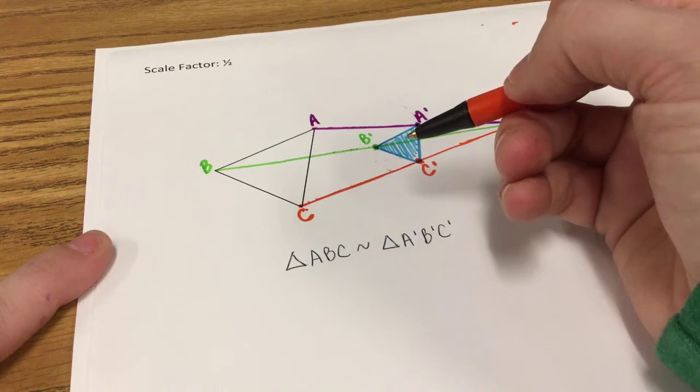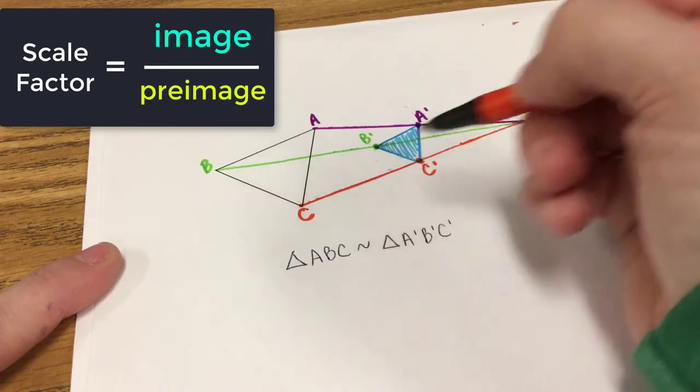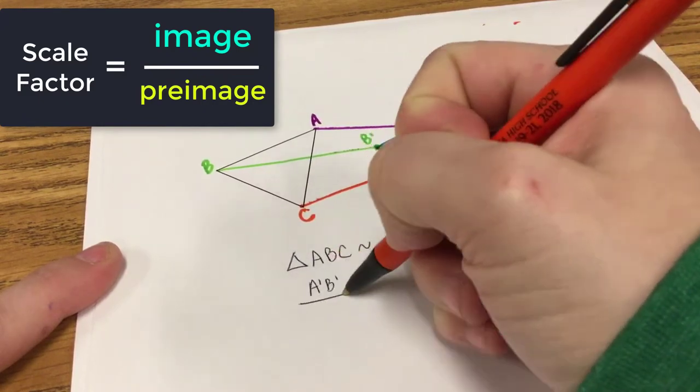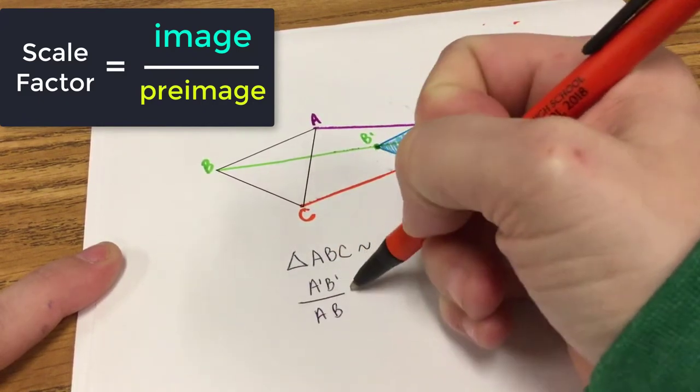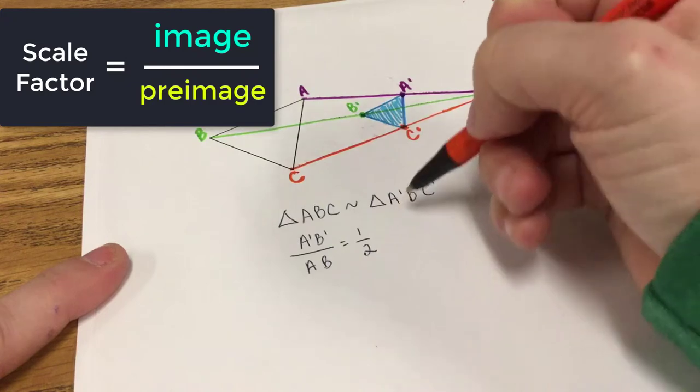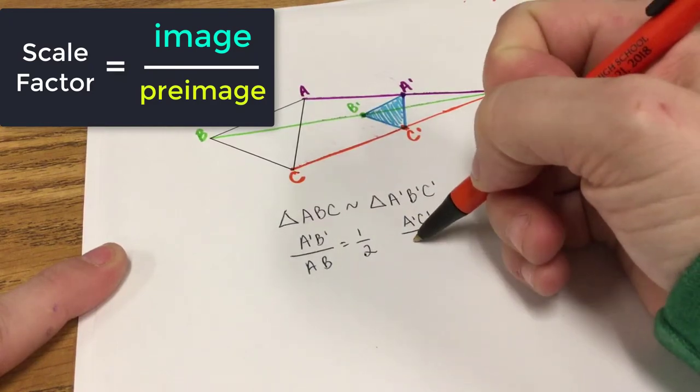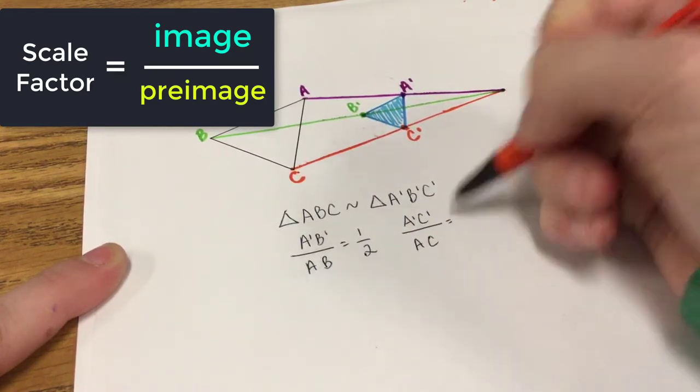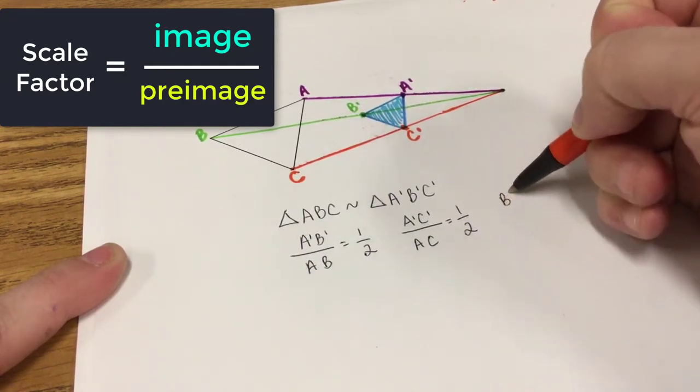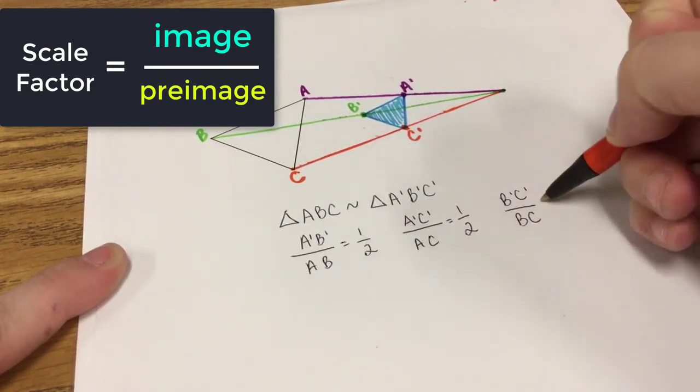We could also write the scale factors. So when we write scale factors, it's always image over pre-image. So we could say A prime B prime over AB equals 1 half because that's the scale factor we were given. We can also write that A prime C prime over AC equals 1 half. And finally, B prime C prime over BC equals 1 half.